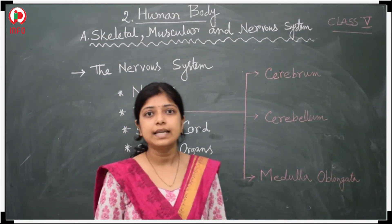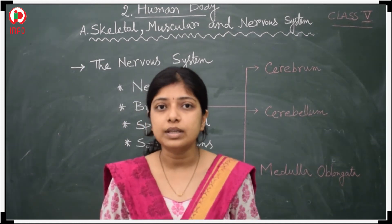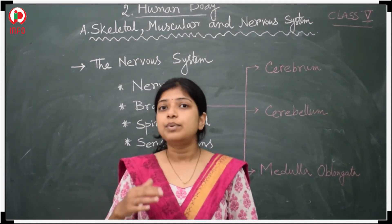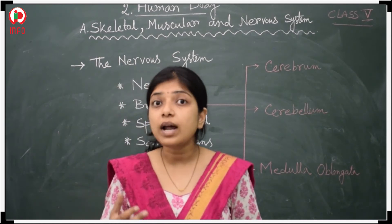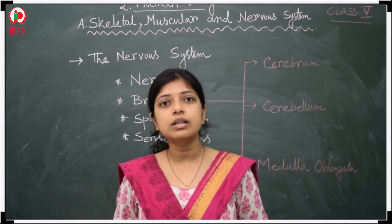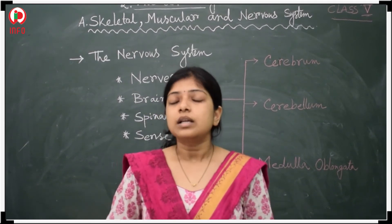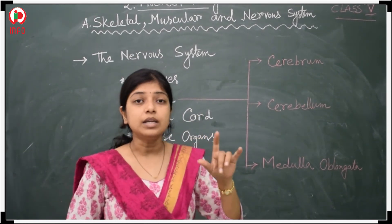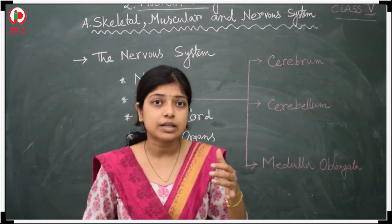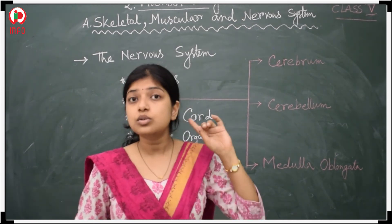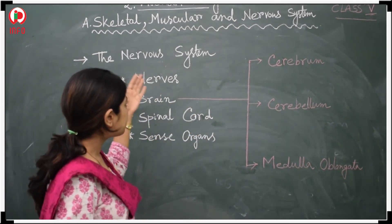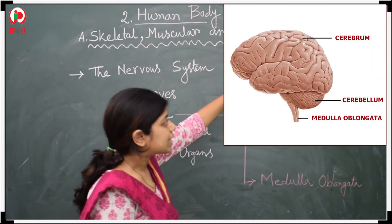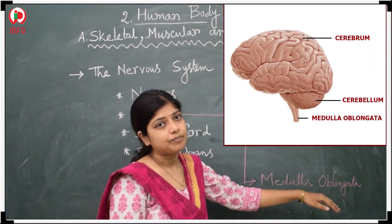The brain is the most important and delicate body part. It instructs our different body parts on what things to do and how to do them. The different nerves send messages from our body parts to the brain, and after reading the message, our brain instructs through motor nerves. The brain is divided into three main parts: cerebrum, cerebellum, and medulla oblongata.